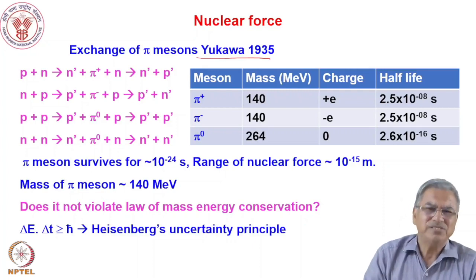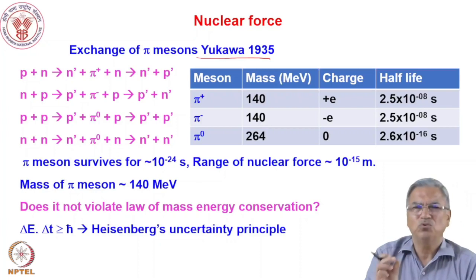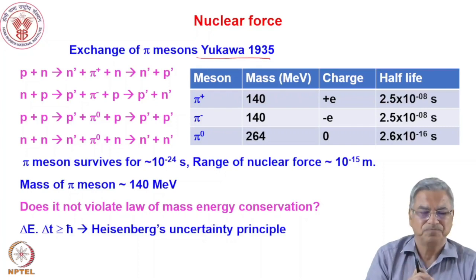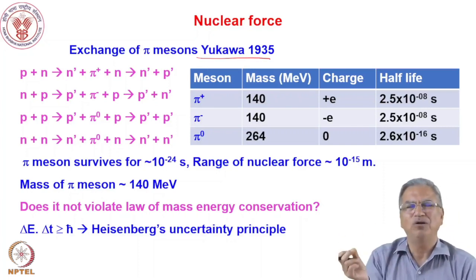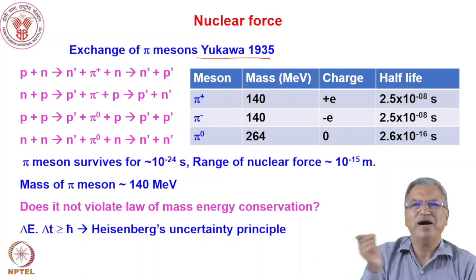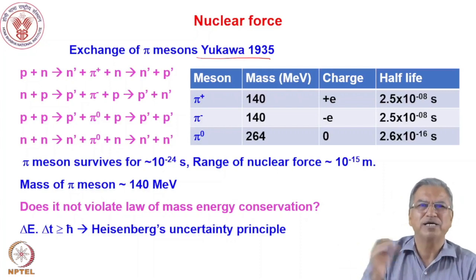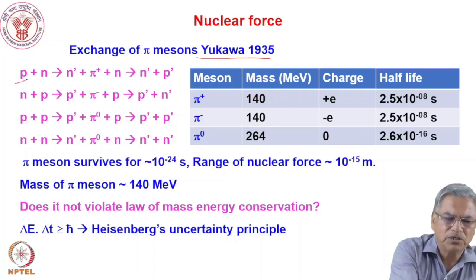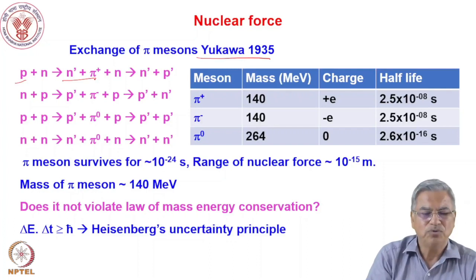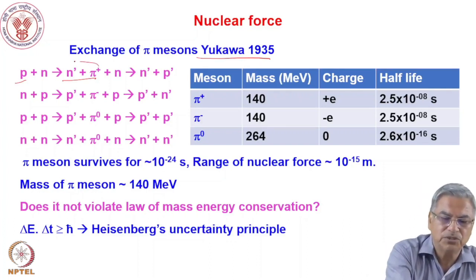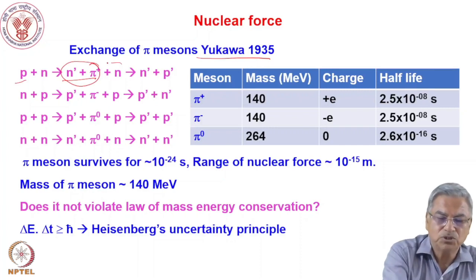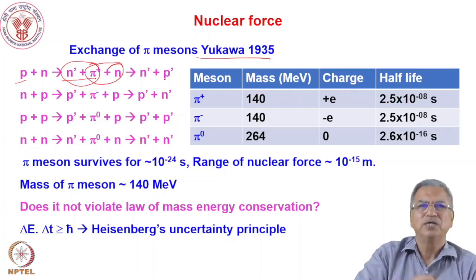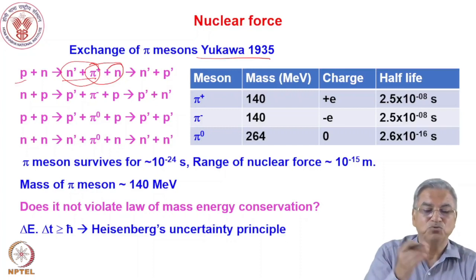Yukawa proposed that inside the nucleus, protons and neutrons are exchanging a particle which he called the meson. It is like two players playing volleyball — if the volleyball is exchanged very fast, you see something like a bond between the two players, and that binds them. Similarly, a proton gets converted into a neutron and a pi-plus meson, and then this pi-plus meson is captured by a neutron to produce a neutron-proton pair. This is how a neutron and proton exchange: a proton becomes pi-plus plus neutron, and so on.